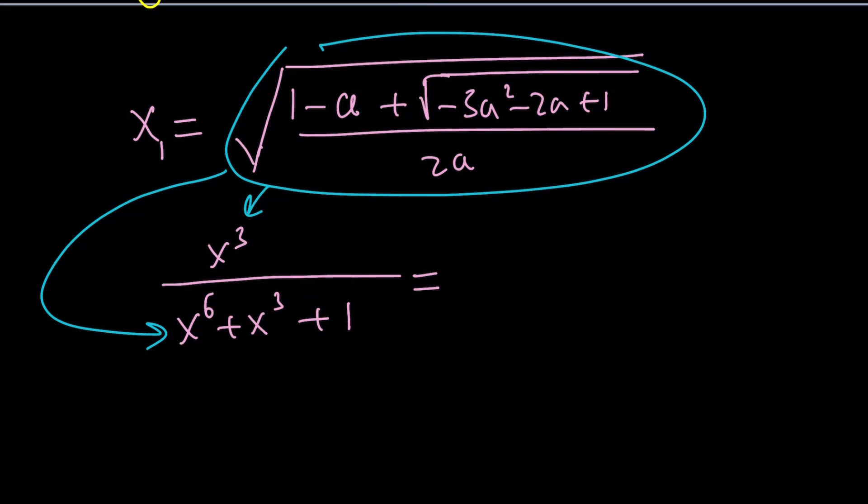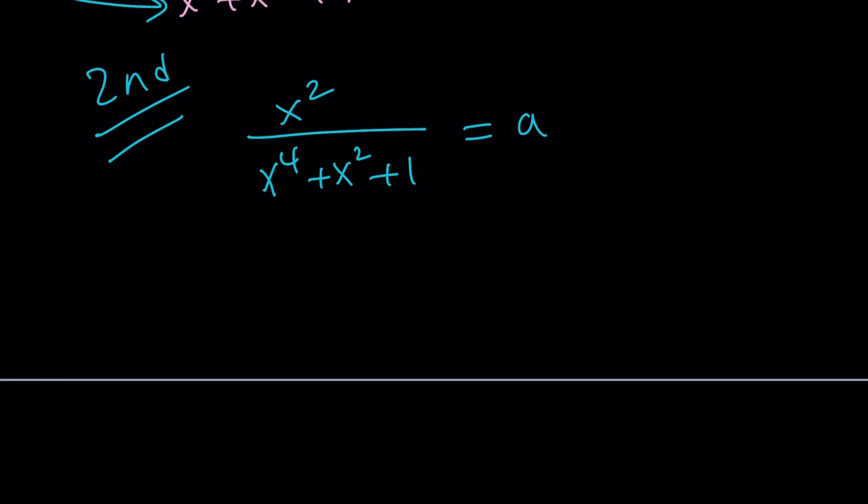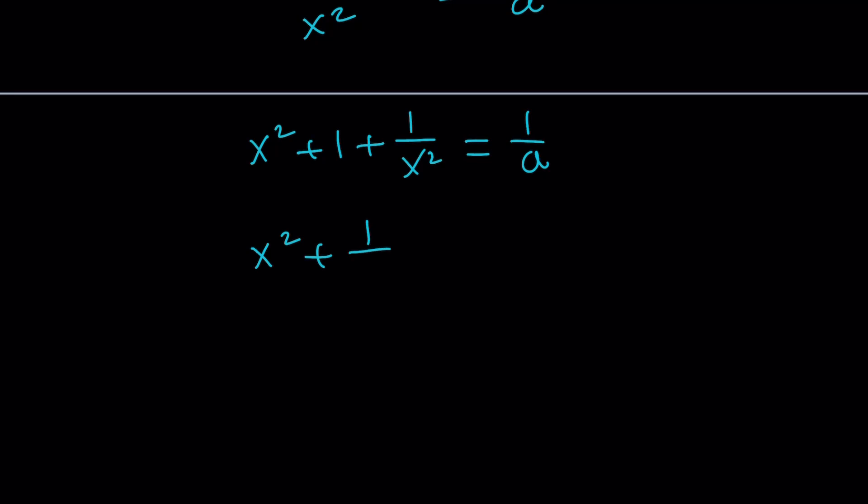Let me know how that goes in the comment section down below. Let's go ahead and take a look at the 2nd method. And if you do know of a 3rd way to do it, please let us know, as always. We have x squared divided by x to the 4th plus x squared plus 1 equals a. Here's what I'm going to do. I'm going to go ahead and flip both sides, because that's going to allow me to separate this. Now, we can split it up into three pieces: x squared plus 1 plus 1 over x squared equals 1 over a. And then by subtracting 1 from both sides, we're able to get x squared plus 1 over x squared in terms of a.